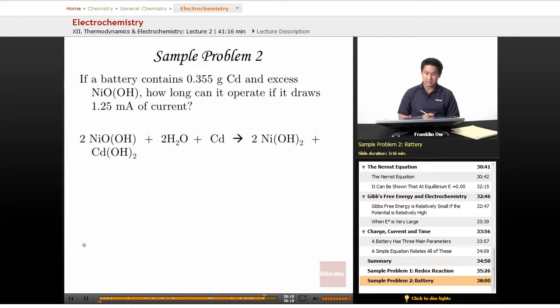All right, so because this question mentions current and how long, there's only one equation that deals with that: n equals it over f. We know that i is amps, so that's 0.00125 amps, and we know Faraday's constant already, 96,500 coulombs per mole of electrons.